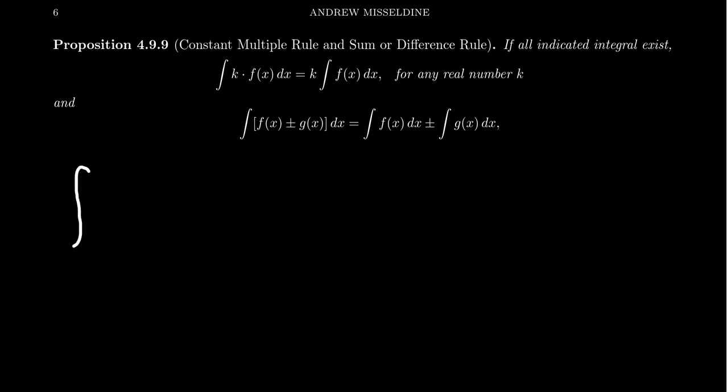That is, if we want to integrate a function of the form x to the n dx, we end up with x to the n plus 1 over n plus 1 plus a constant. Don't forget that constant. This of course only works when n doesn't equal negative 1. Otherwise use the natural log in that situation.